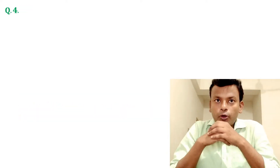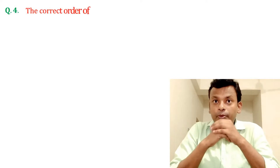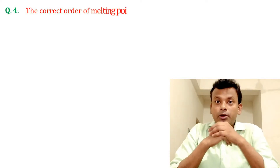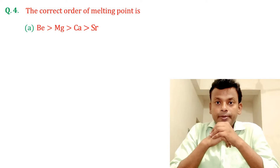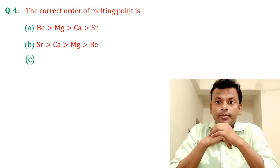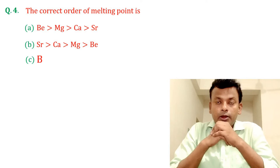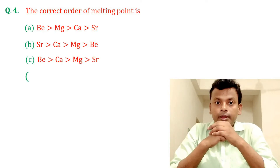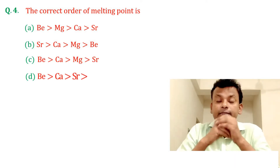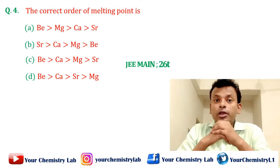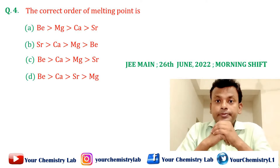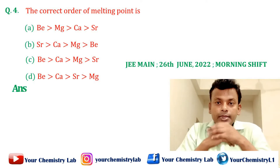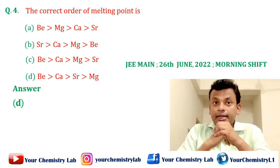Question number 4: The correct order of melting point is given in the options. This question was set in JEMN 26th June 2022 Morning Shift. Option D is the correct answer.